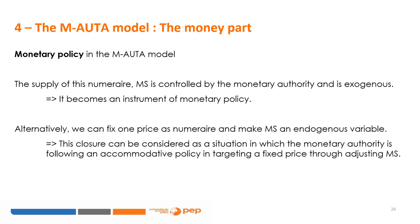We can discuss monetary policy options. Given the closure, the numeraire commodity is money, and the supply of this numeraire MS is controlled by the monetary authority and is exogenous — it becomes an instrument of monetary policy. The authority can decide to increase the amount of money, changing the value of the currency. Alternatively, we can fix one price of any good or commodity as the numeraire and make MS an endogenous variable. This closure represents a situation where the monetary authority follows an accommodative policy, targeting a fixed price by adjusting MS.